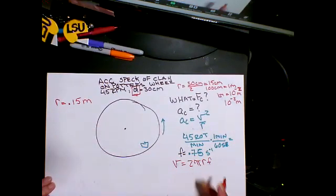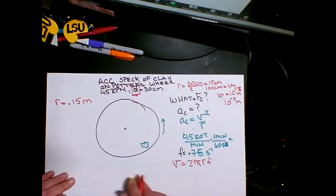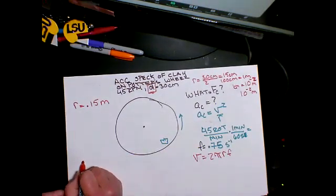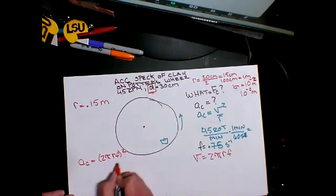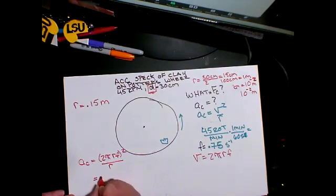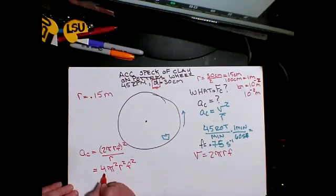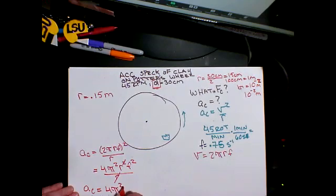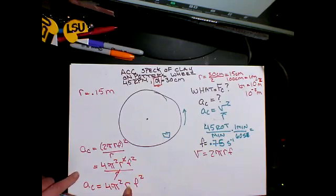I have my velocity in terms of my frequency. This asks for the center-seeking acceleration, so I need to put all those values in. My center-seeking acceleration is V squared, which is 2πrf squared, over r. Writing this out: 4π²r²f² - that's the oft-forgotten f - divided by r. That simplifies to AC = 4π²rf². This gets forgotten because we cancel things out and ignore the frequency.